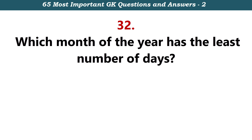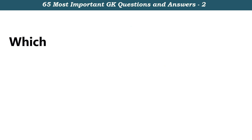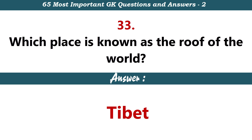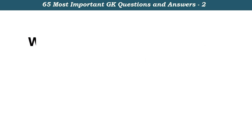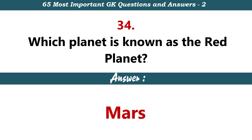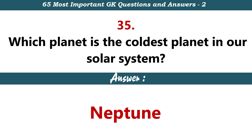Which month of the year has the least number of days? February. Which place is known as the roof of the world? Tibet. Which planet is known as the red planet? Mars. Which planet is the coldest planet in our solar system? Neptune.